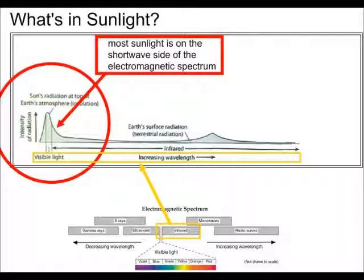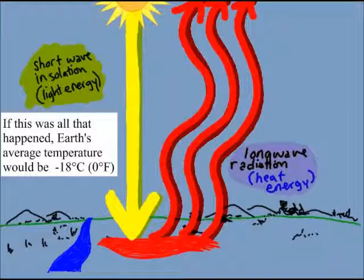Most sunlight comes in the form of visible light. The basic way that the sun interacts with the atmosphere is that the short wave radiation comes into the atmosphere, heats up the Earth, and then long wave infrared radiation in the form of heat heats up the air.